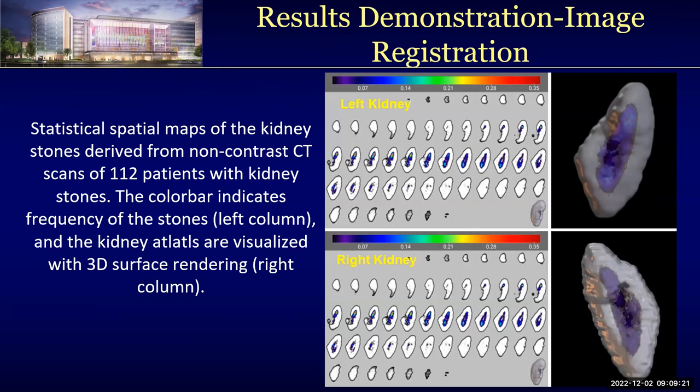By doing so, we spatially transformed the kidney stone image of each kidney corresponding to the left or right kidney atlas with the same image deformation obtained for creating the atlas. The color bar indicates the frequency of the kidney stones. The image on the right shows the kidney atlas visualized with 3D surface rendering.